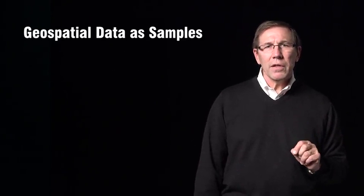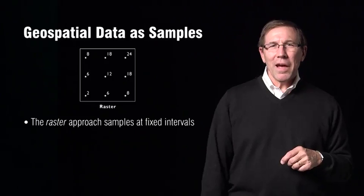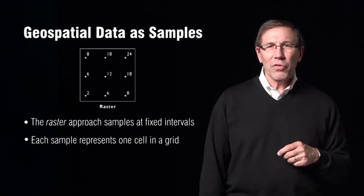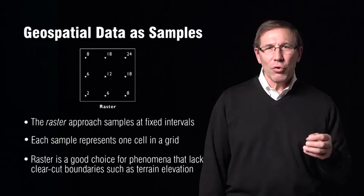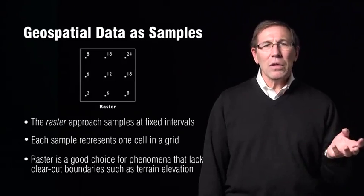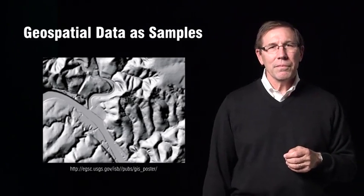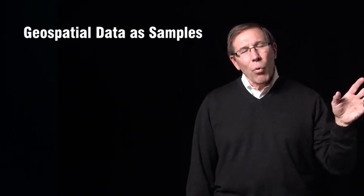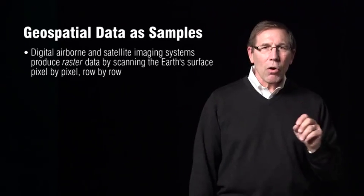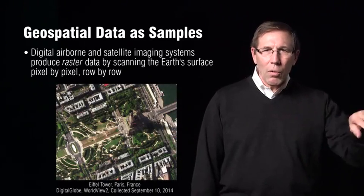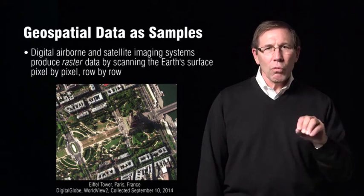There's another alternative way of collecting this information — it's called raster. The raster approach involves sampling attributes at a fixed interval. Each sample represents one cell in a checkerboard-like fashion. The raster strategy is a good choice for representing phenomena that lack clear boundaries, like elevation. Where's the edge of an elevation? Digital, airborne, and satellite imagery today are largely raster data collected by running a scanner across the Earth's surface — this is a pixel-by-pixel, row-by-row collection.